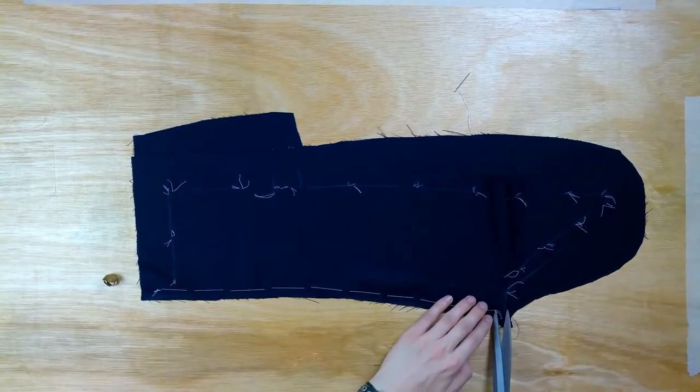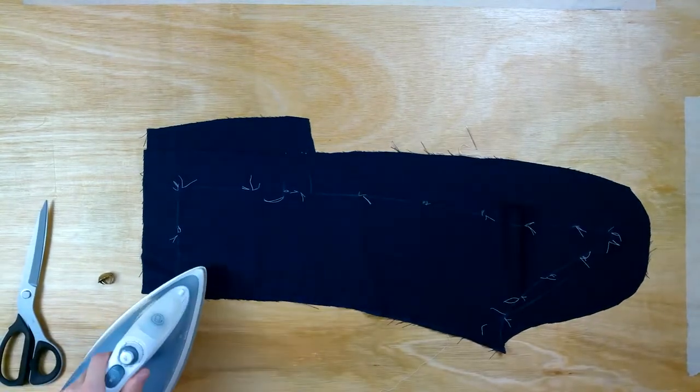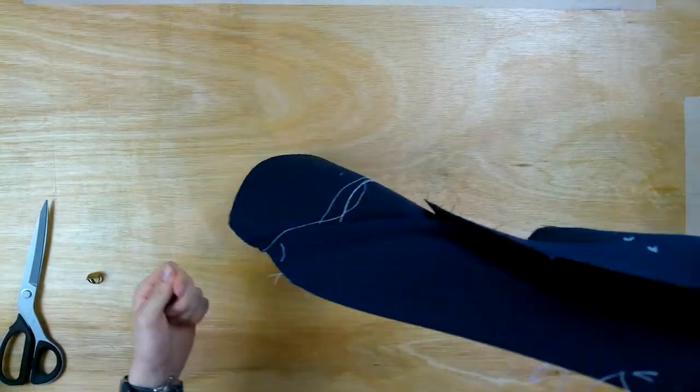To iron the seam open, lay the undersleeve flat and the top sleeve will rumble and stuff. Just iron the seam open like that.